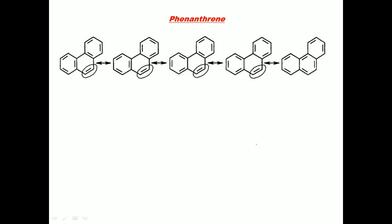Coming to phenanthrene — it is a different molecule with specific properties. It has five resonant structures, and among these five resonant structures there are four types of carbon-carbon bonds. The labeled bond 'd' has four times double bond character and once single bond character, so this bond has the least bond length.